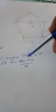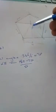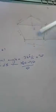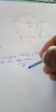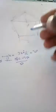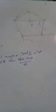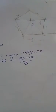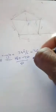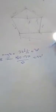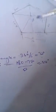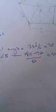So you say 180 minus this angle — 36 times two — and then over two, giving us two triangles. That gives you 54 degrees. We have our angle. Now we need our perpendicular height.